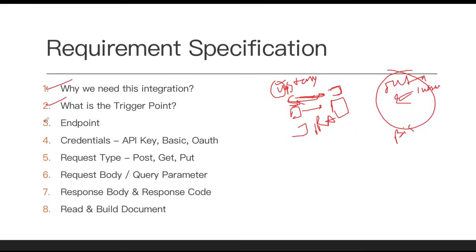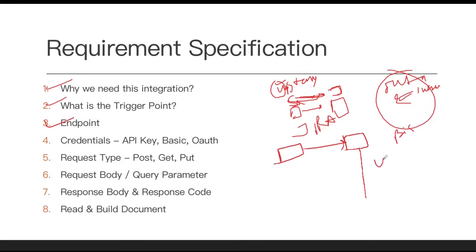Next is the endpoint. Let's say you have a ServiceNow instance and you are going to send data to a Jira instance — there could be many Jira instances or subdomain instances. You need to send the data to a specific Jira instance. That specific URL is called the endpoint.